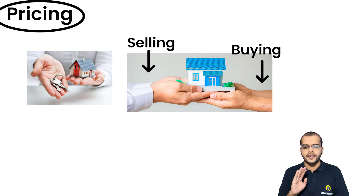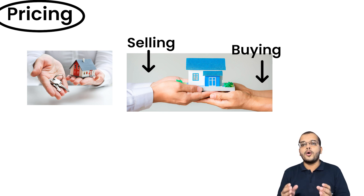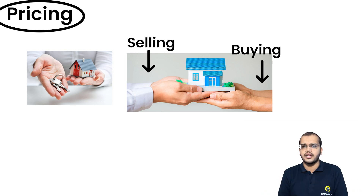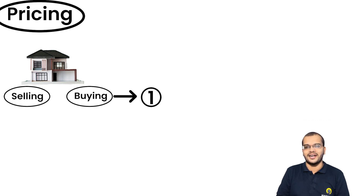Now let's consider the probability — what is the probability that at least one person will buy the land? If not the first customer, then the second; if not the second, then the third will at least buy it. The seller doesn't depend on only one client — they approach multiple people, and whoever suits best for the pricing is the one they sell to.